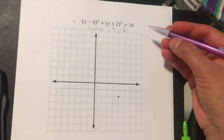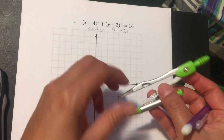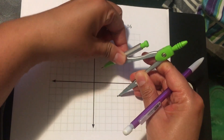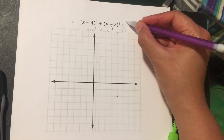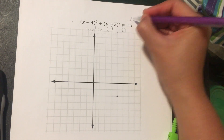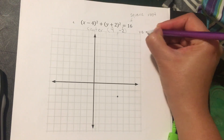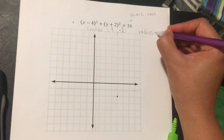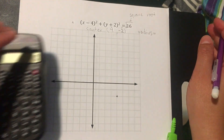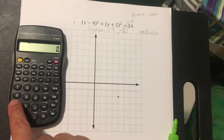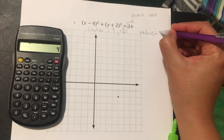To find how wide to open the compass, I look at the number on the right side of the equation and take the square root — that's going to be the radius of the circle. What is the square root of 16? Many of you already know it's 4, but you can press 16, press square root, and the answer is 4.